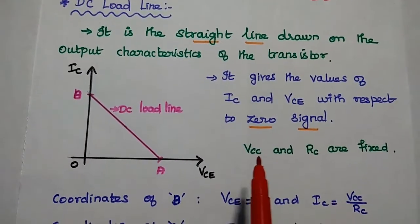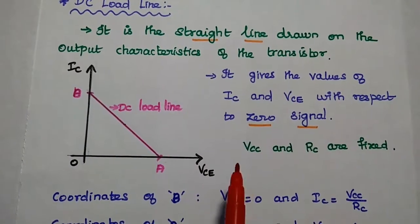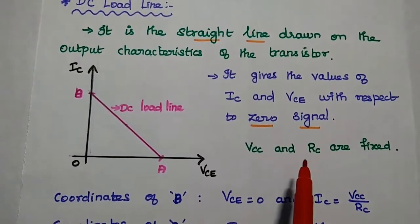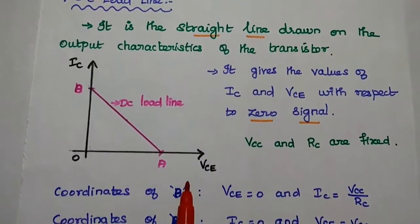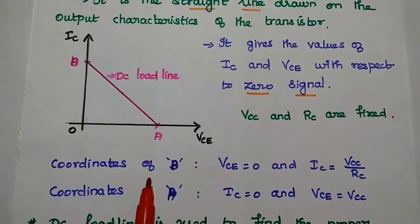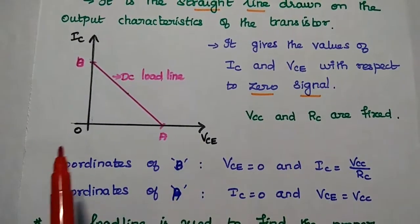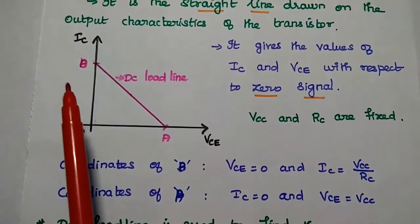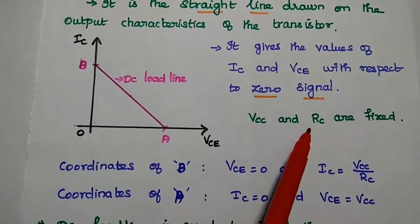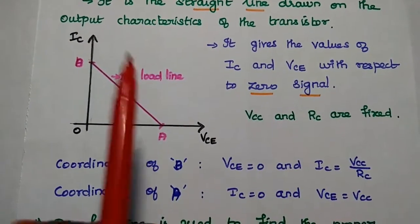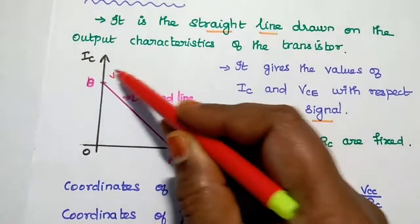Here, VCC and RC are both fixed — that means the supply voltage and the collector resistance are both fixed. We are going to find out the coordinate points. First, if VCE is equal to zero, then the collector current becomes VCC divided by RC. These two are known values, so the collector current equals VCC by RC.